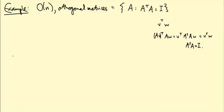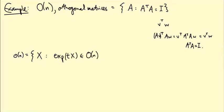So the Lie algebra in this case, I'm going to write as little o(n). This is the set of matrices X such that exp(tX) is orthogonal in big O(n) for all t in R.